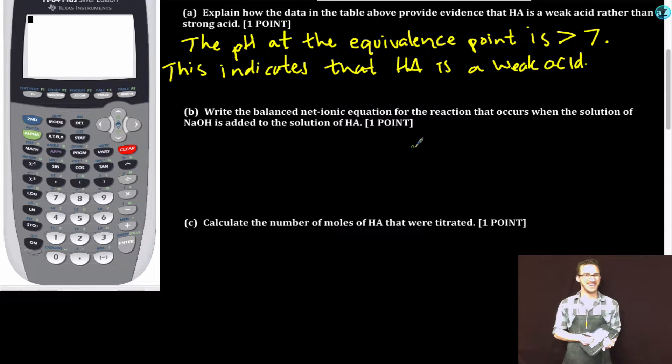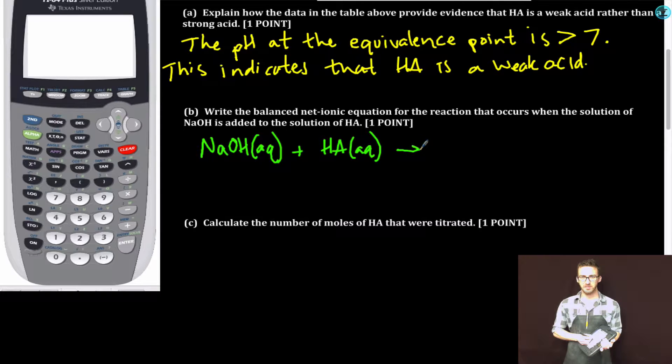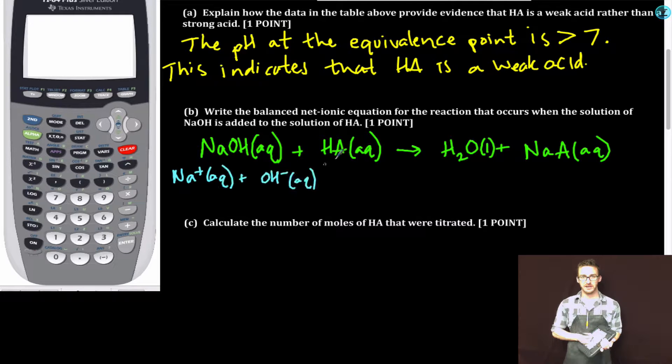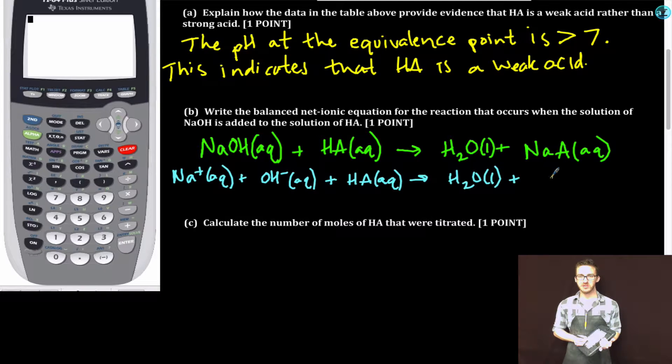Part B: Write the balanced net ionic equation for the reaction that occurs when the solution of NaOH is added to the solution of HA. First I'll write the complete molecular equation. Sodium hydroxide solution added to weak acid solution. It's an acid-base neutralization reaction, so we're going to form water and a sodium salt. Remember, your sodium salt is highly soluble. Sodium hydroxide is a strong base, so this is really going to be ionized. HA is a weak acid, so it's going to stay in its molecular form. Liquid water is going to stay stuck together, and our sodium salt, highly soluble, is going to separate out into its ions.